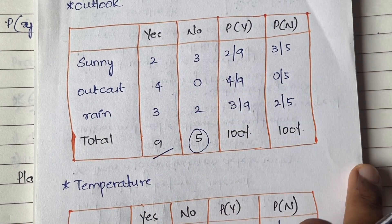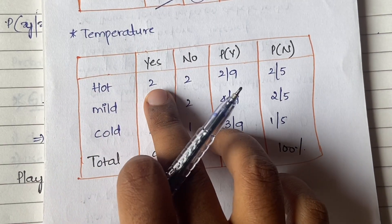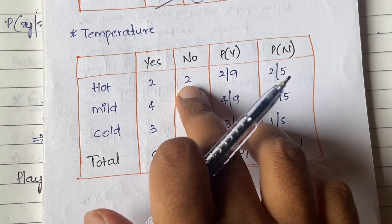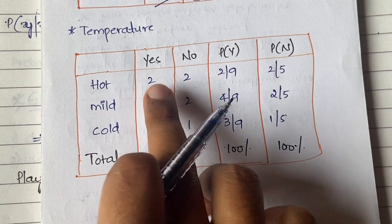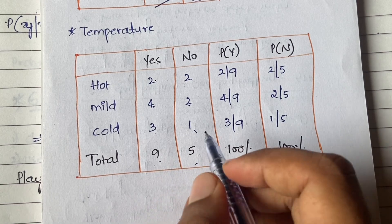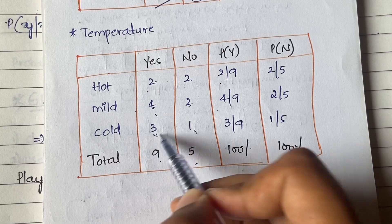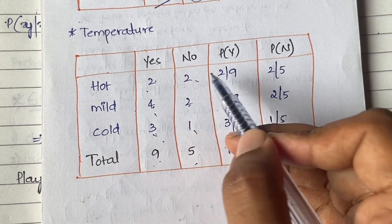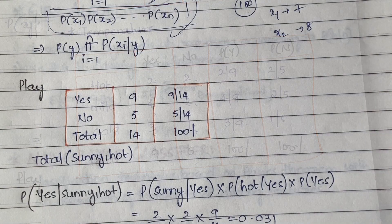So the probabilities for outlook given yes are: sunny = 2/9, overcast = 4/9, rainy = 3/9. Given no: sunny = 3/5, overcast = 0/5, rainy = 2/5. Similarly for temperature: hot yes = 2, mild yes = 4, cold yes = 3, giving total yes = 9. Hot no = 2, mild no = 2, cold no = 1, giving total no = 5. So probabilities given yes: hot = 2/9, mild = 4/9, cold = 3/9; given no: hot = 2/5, mild = 2/5, cold = 1/5.